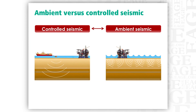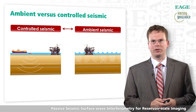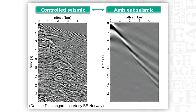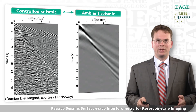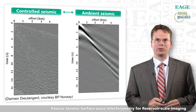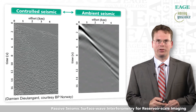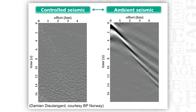I'd like to make a comparison between controlled-source seismic and ambient seismic. On the left you see a gather of controlled-source seismic and on the right a gather for virtual-source seismic. The biggest difference between the two panels is the frequency content. On the right I had to apply a high-cut filter to select only that energy suitable for passive seismic interferometry. But both recordings contain surface waves, which makes them very complementary data.